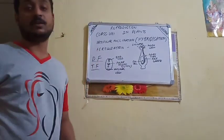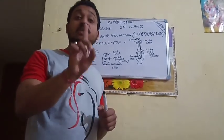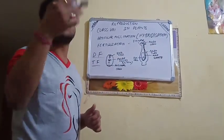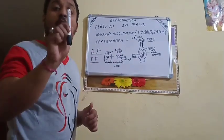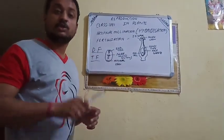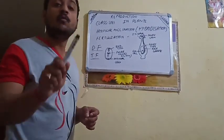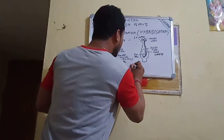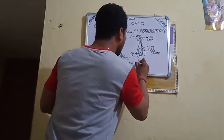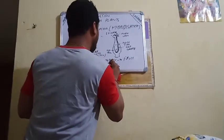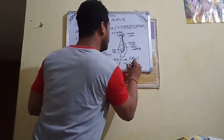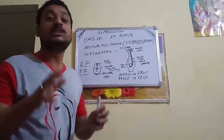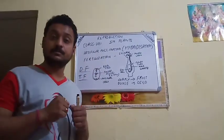Now, what are the post-fertilization events? After fertilization is complete, formation of endosperm will take place. The ovary will mature to form the fruit, and the ovule will develop or mature to form the seed. The other whorls of the flower — calyx, corolla, stamen, and all — will wither off, meaning they will fall off.